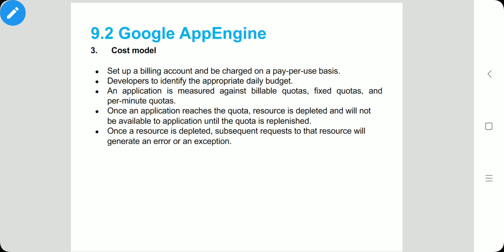Once the application has been tested and tuned for App Engine, it is possible to set up a billing account and obtain more allowance, being charged on a pay-per-use basis. First, we have to develop the web application, test it, then deploy it on App Engine. After that, a billing account is created and the bill is charged on a pay-per-use basis. This allows developers to identify the appropriate daily budget they want to allocate for a given application.